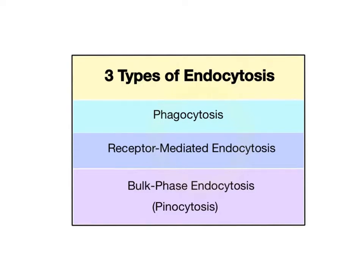Let's examine the three types of endocytosis: phagocytosis, receptor-mediated endocytosis, and bulk-phase endocytosis, also called pinocytosis.